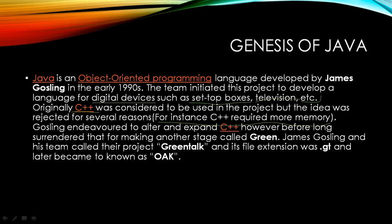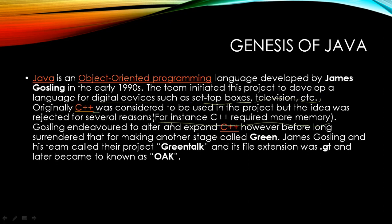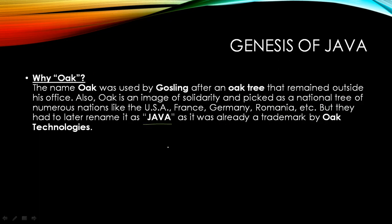Gosling endeavored to alter and expand C++, but eventually abandoned that to create a new platform called Green. James Gosling and his team called their project 'Green Talk,' and its file extension was .gt. It later became known as OAK. The name OAK was used by Gosling after an oak tree that stood outside his office. OAK is a symbol of strength and is the national tree of many countries like the USA, France, Germany, and Romania. They later renamed it JAVA because OAK was already a trademark held by Oak Technologies. So the name went from Green Talk to OAK to finally JAVA.